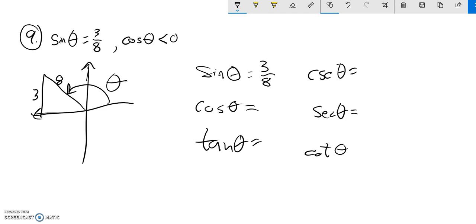Now I can use the Pythagorean theorem to get the x value, remembering it's negative because it goes to the left. I know the hypotenuse, so 8 squared minus 3 squared is 64 minus 9, which equals square root of 55, and it's negative.